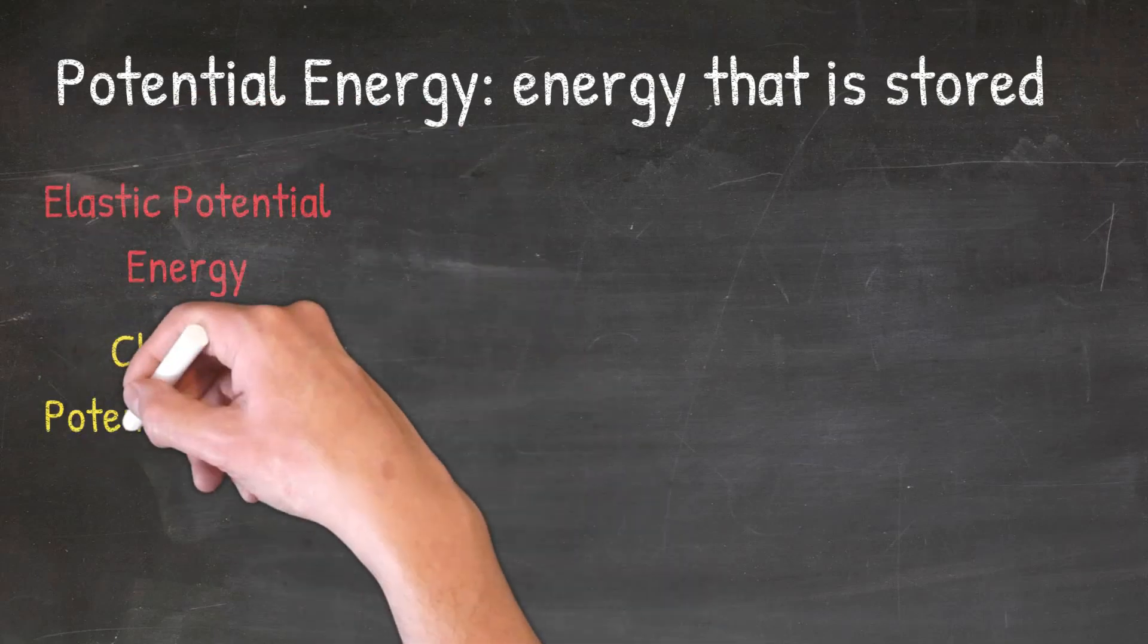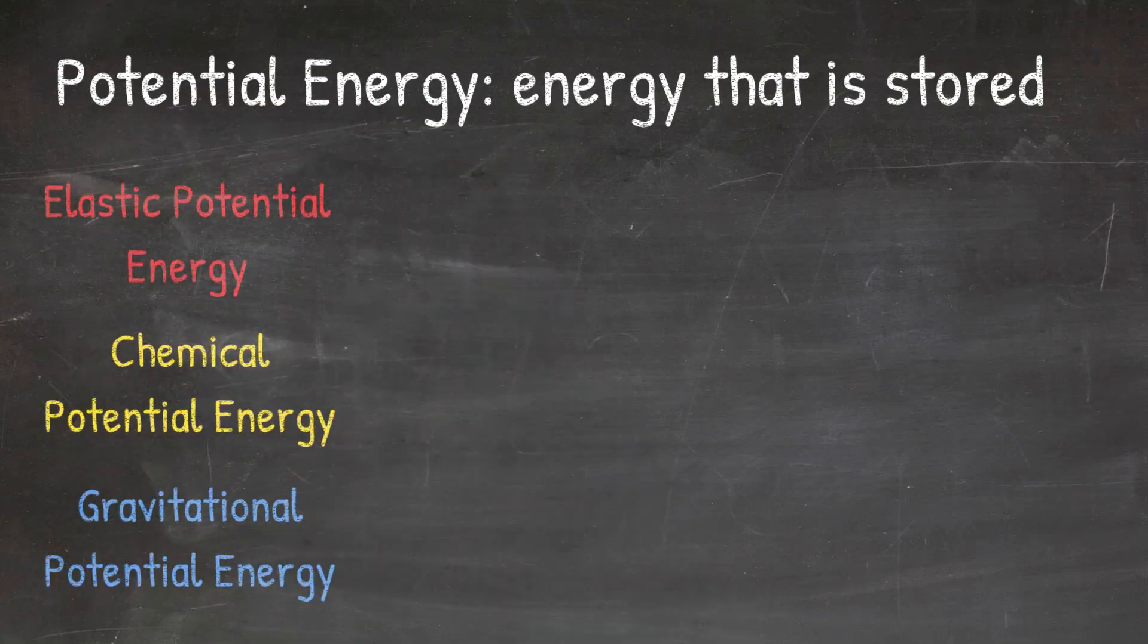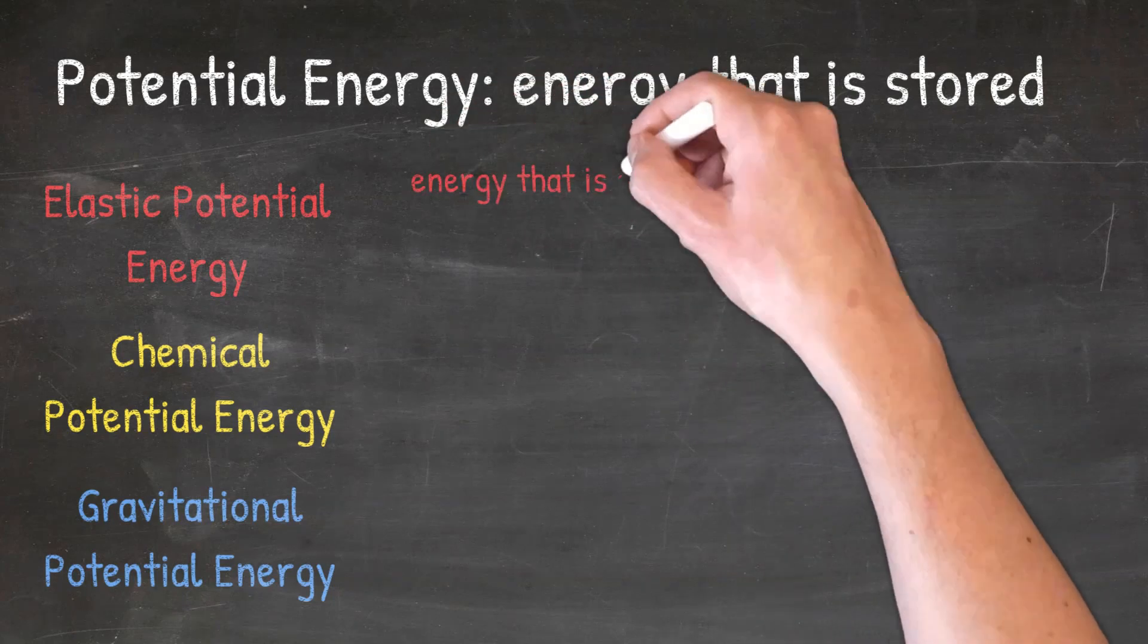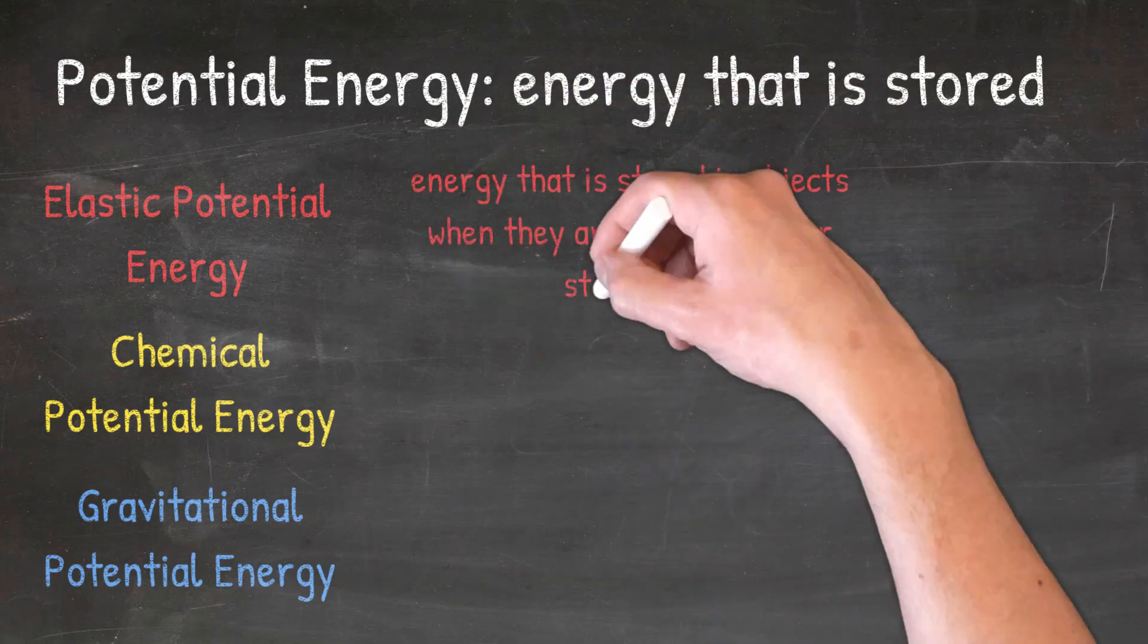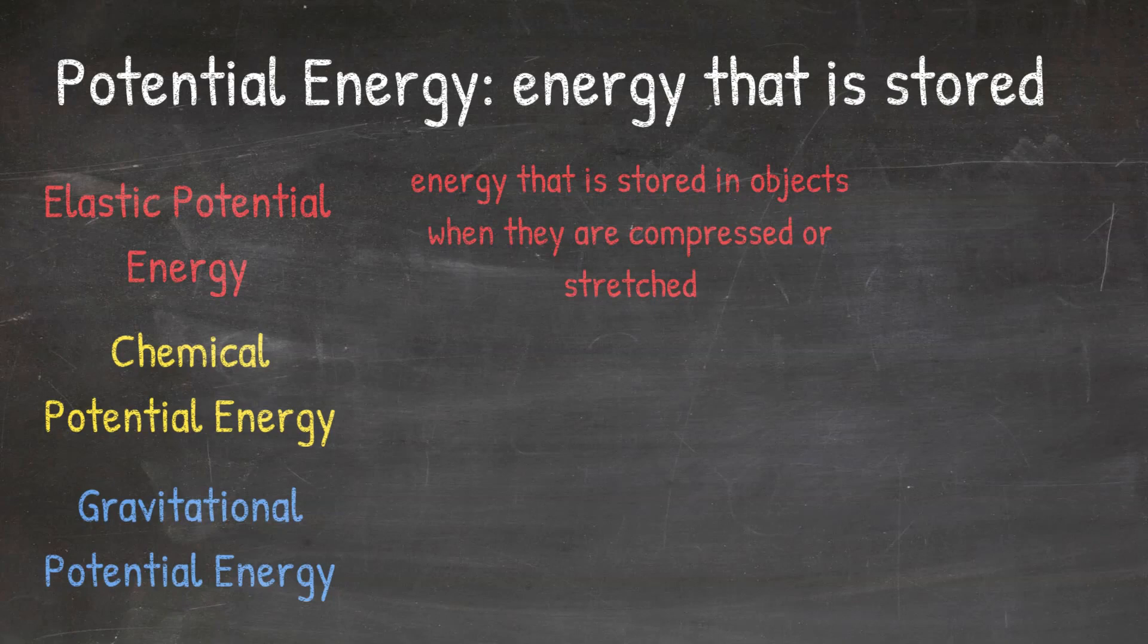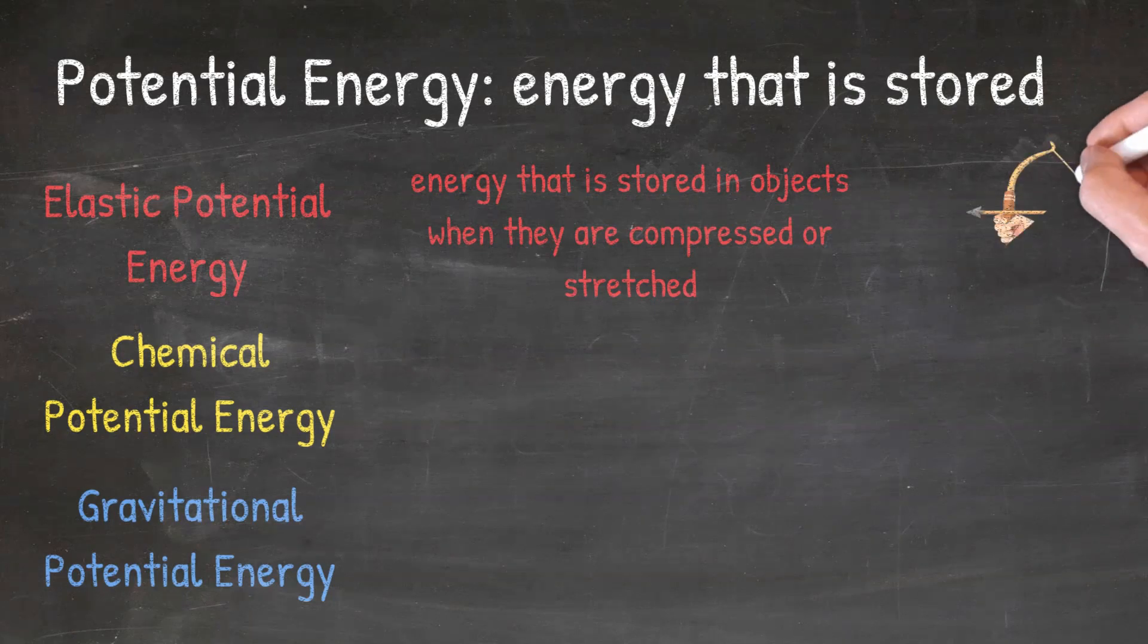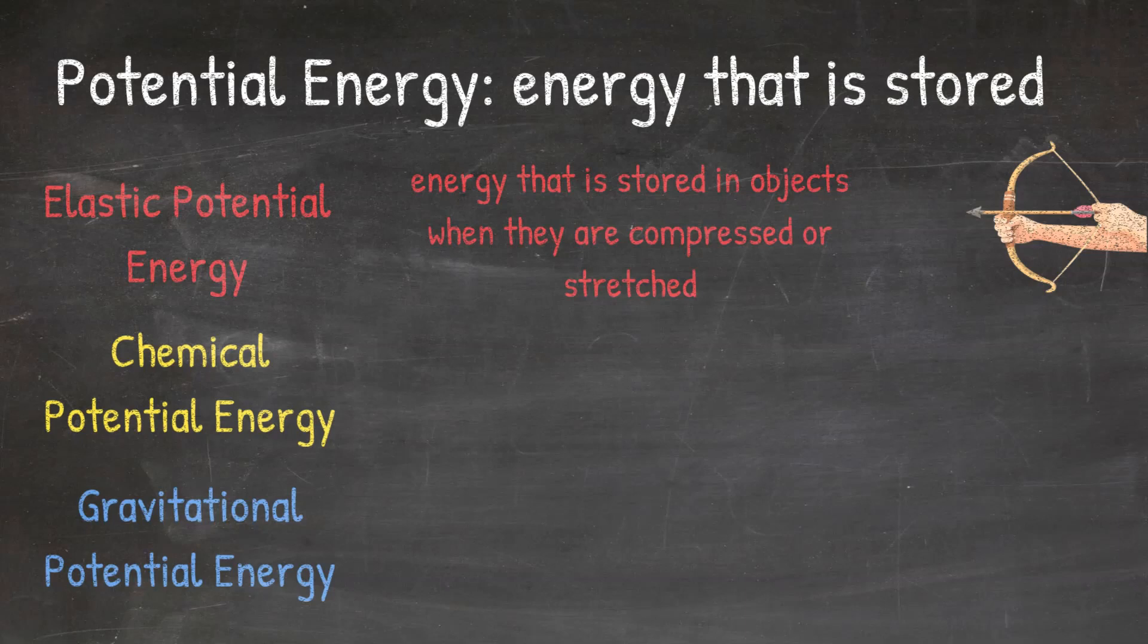Elastic, chemical, and gravitational potential energy. Elastic potential energy is energy that is stored in objects when they are compressed or stretched. An example of this is a bow and arrow. When you pull the arrow back and stretch the string, you are storing elastic potential energy in the string.